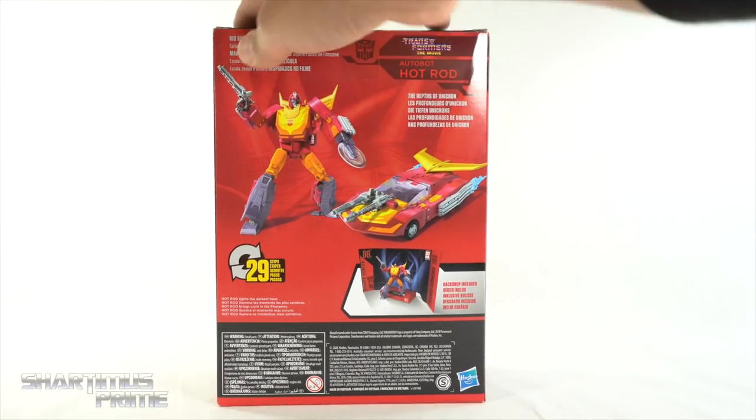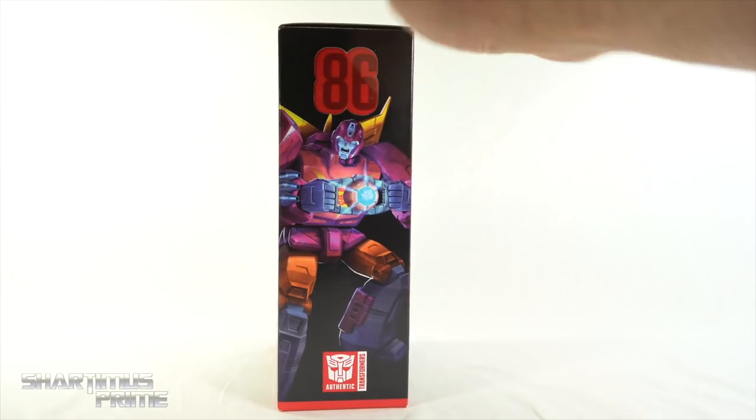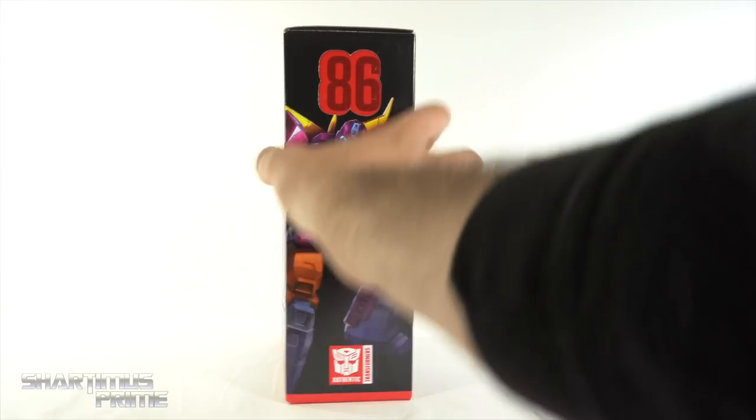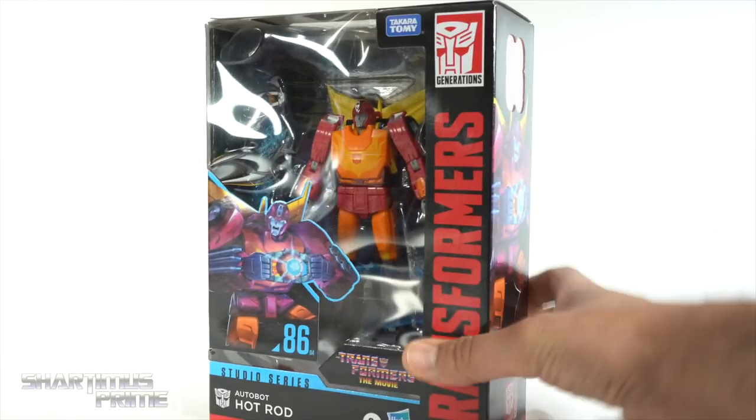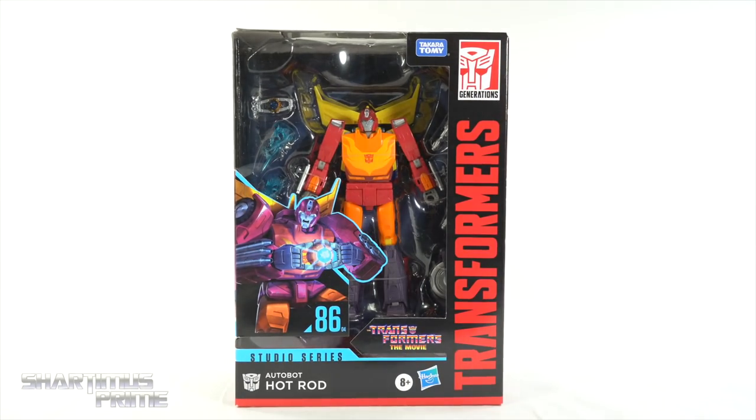And then over here you can see both modes. It says the depths of Unicron in multiple languages and you get the backdrop, 29 steps we'll go over every single one. There's Hot Rod again with the Matrix and then he has the window over up at the top. So let's get to it and crack this thing open.